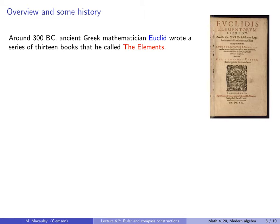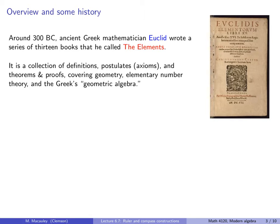Euclid was an ancient Greek mathematician, and around the year 300 BC, he wrote a series of 13 books that he called The Elements. This is a collection of definitions, postulates — what we now know as axioms — and theorems and proofs covering geometry, elementary number theory, and the Greeks' so-called geometric algebra.